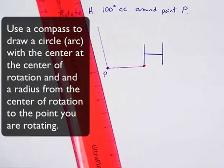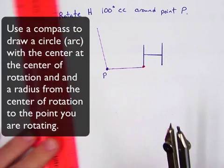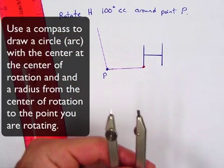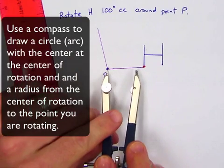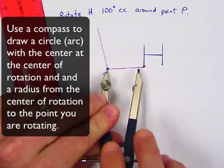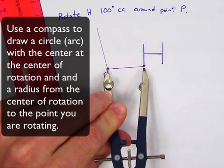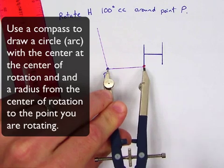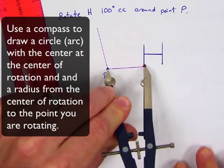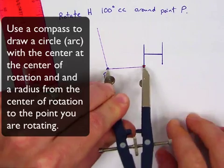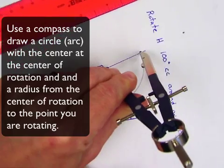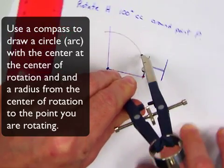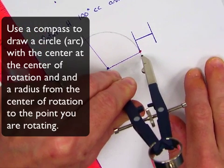Now here's where I like to use a compass to finish this off. So what I'm going to do is make P the center of my circle, or the center of my arc, and I'm going to open my compass to the point I'm trying to rotate.